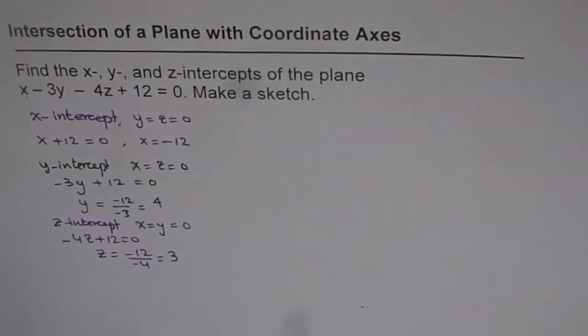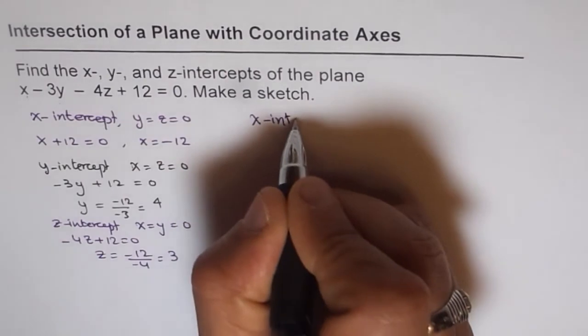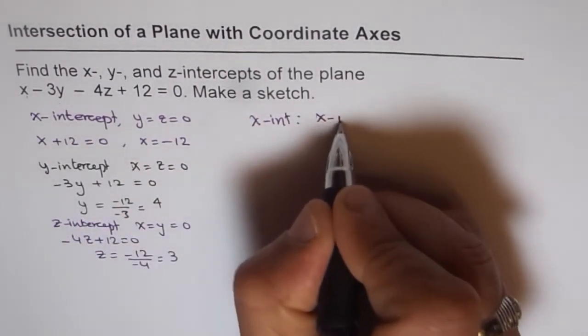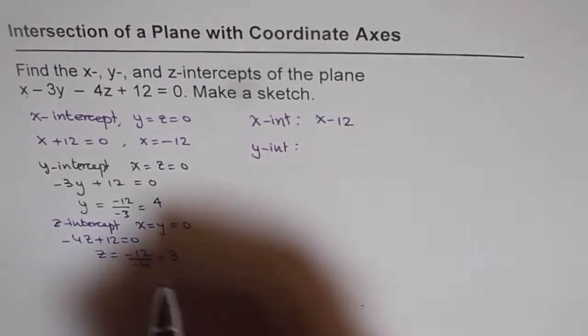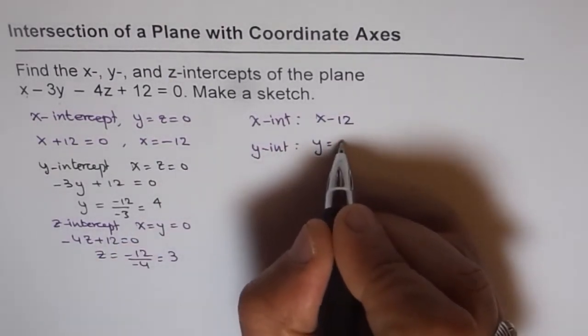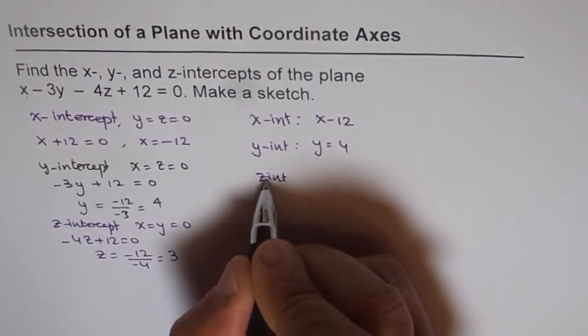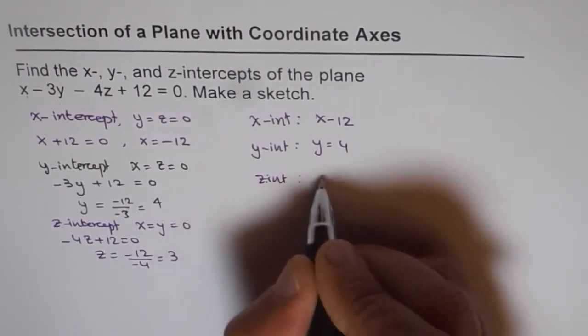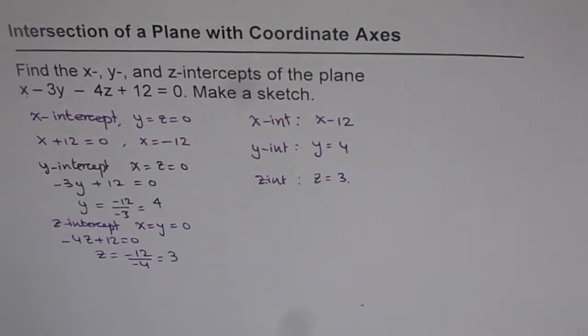So we have x, y, and z-intercepts. We have x-intercept as x equals to minus 12, y-intercept as y equals to 4, and z-intercept as z equals to 3. So let's try to sketch this and see how the plane will look like.